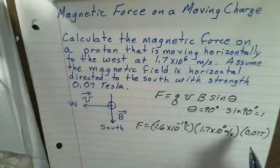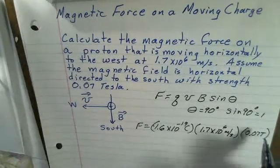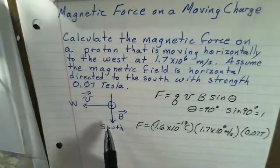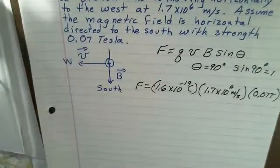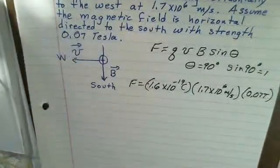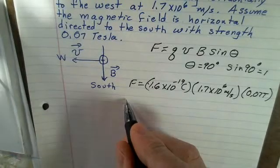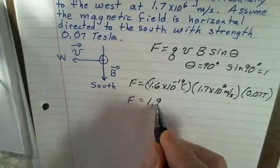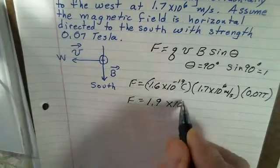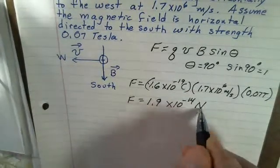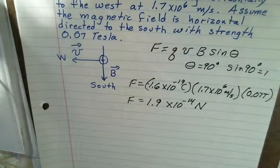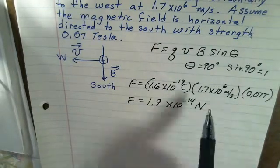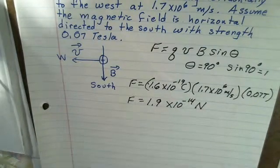I'm going to ignore the factor of 1. In this particular problem, the sine of theta evaluates to 1 because the velocity and the magnetic field are perpendicular to each other. We can easily plug this into a calculator, and what I came up with was 1.9 times 10 to the minus 14 newtons. That's the magnitude of the force. You should pause and do this calculation on your own calculator and see if you produce that number.